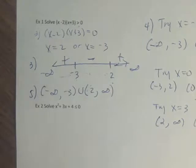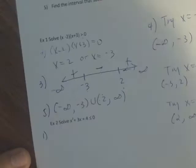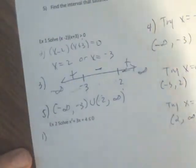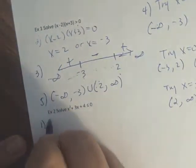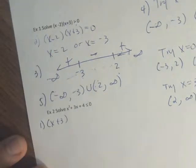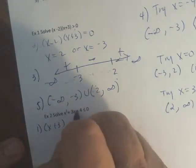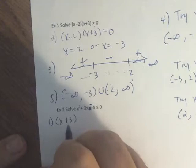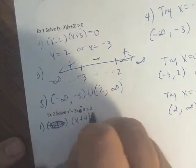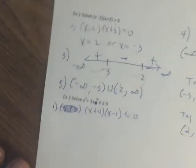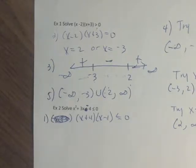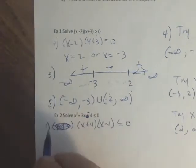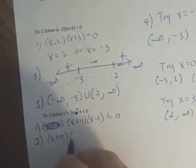In example 2 and example 3, I have to factor first. Step one: x squared plus 3x minus 4 factors to x plus 4 times x minus 1, less than or equal to 0. Step two: solving x plus 4 times x minus 1 equals 0 gives x equals negative 4 or x equals 1.